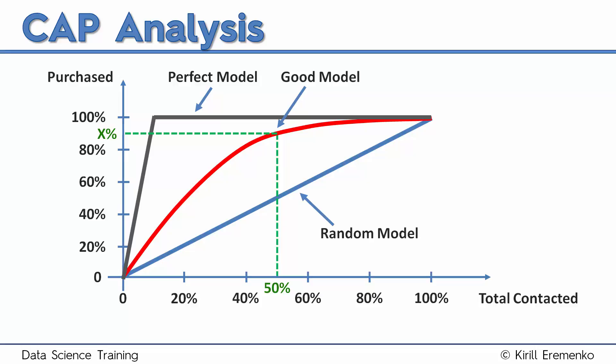So basically, how many churners will you pick up or action takers, or how many positive outcomes are you going to identify if you take 50% of your population? In this case we can see it's around 90% or something like that. And just by looking at that, there's a rule of thumb how you can assess your model based on that X number. Here it is.